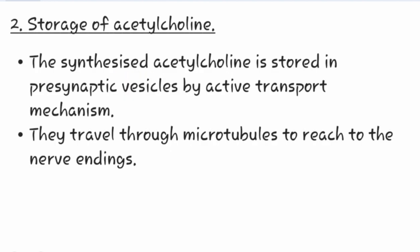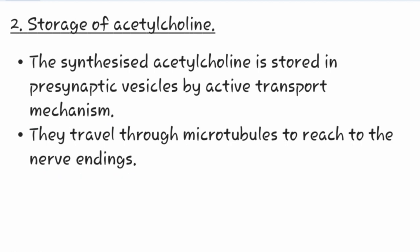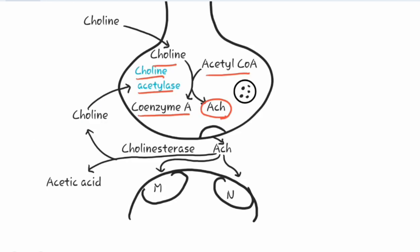The second step is storage of acetylcholine. The synthesized acetylcholine is stored in presynaptic vesicles by an active transport mechanism. They travel through microtubules to reach the nerve endings. These synaptic vesicles are concentrated in the nerve endings, and since they are present in the presynaptic nerve, they are also known as presynaptic vesicles.